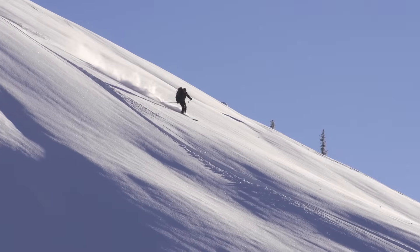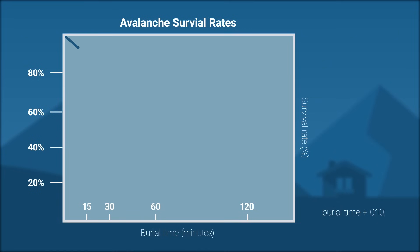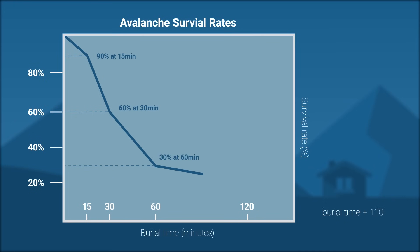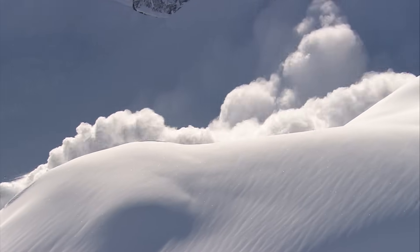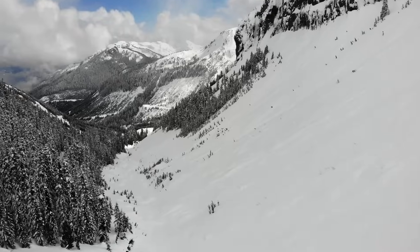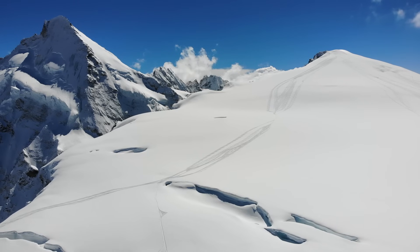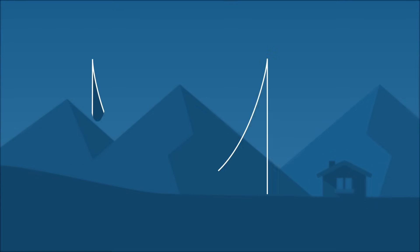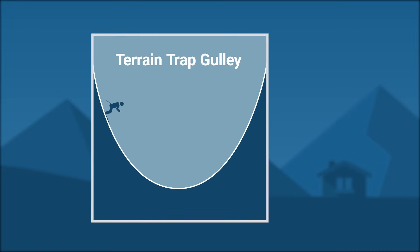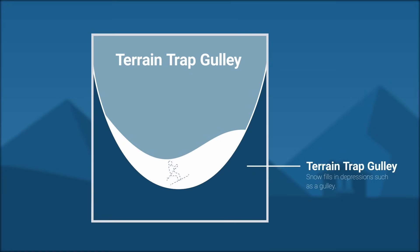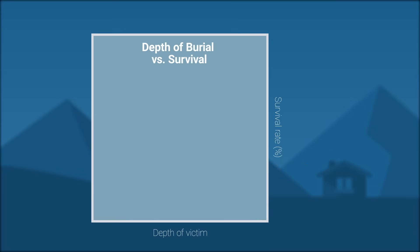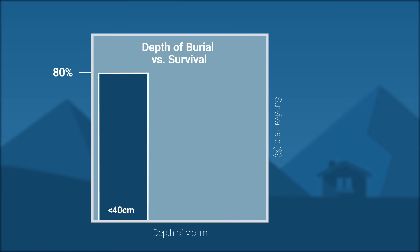If you think about avalanche statistics, you'll see that the largest survival factor is time spent buried, and next on the list is trauma. Any feature that allows snow to build up into a deeper deposit is a danger. Gullies or glacial crevasses are high consequence examples, but this can also happen anywhere the snow is able to become trapped and pile up — like a sharp angle change at a valley bottom, lake, or flat section. The more snow is allowed to pile up, the deeper the burial.